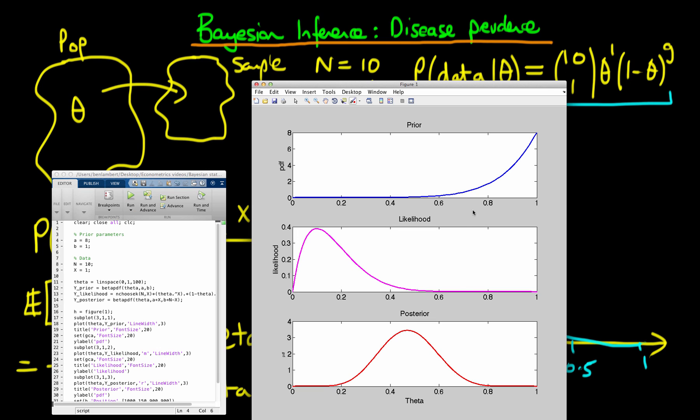We see that our prior is now very strongly peaked up towards the entire population having the disease, so up towards 1. And the likelihood here still remains where it is. And hence the posterior is the sort of mixture of these two things if you imagine multiplying them together.